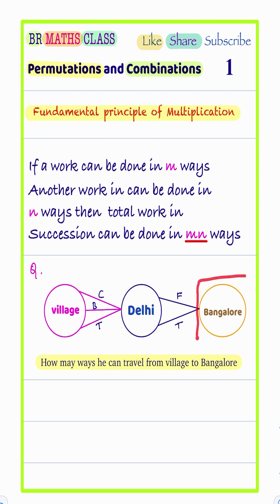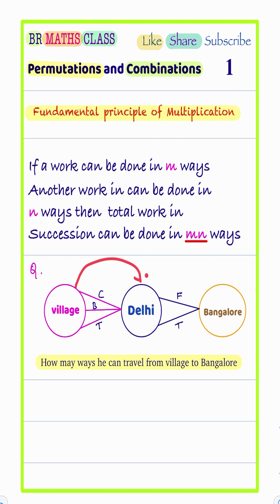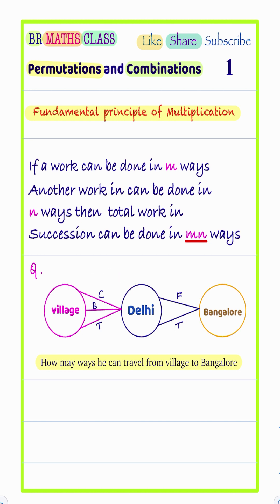A person wants to attend an interview in Bangalore. For that, he needs to travel from his village to Delhi, and then Delhi to Bangalore. To travel from his village to Delhi, he has three modes of transportation: he can go by car, he can go by bus, or he can go by train.